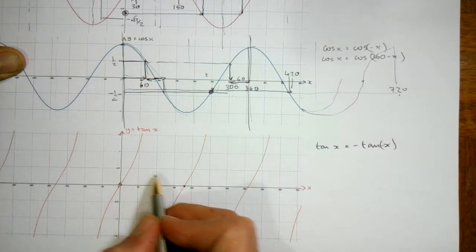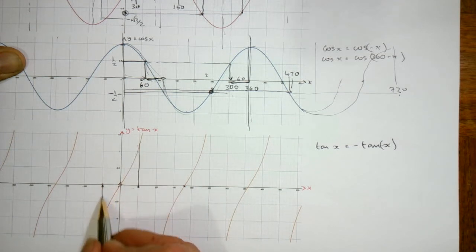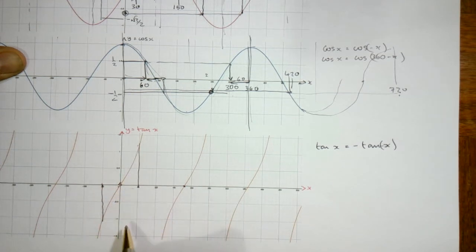So tan of 60 is the same as, or 50 in this case, is the same as minus the tan of minus 50. So if tan of 50 is 1 and a bit, tan of minus 50 is minus 1 and a bit. All right.